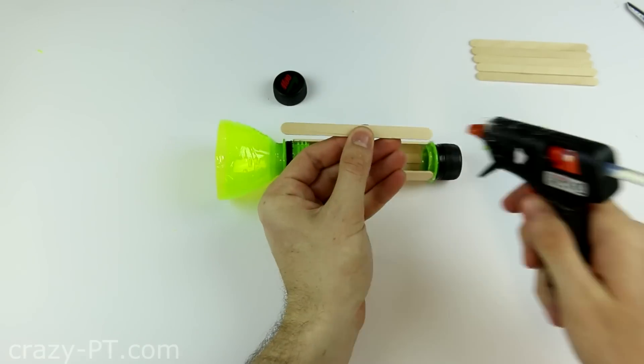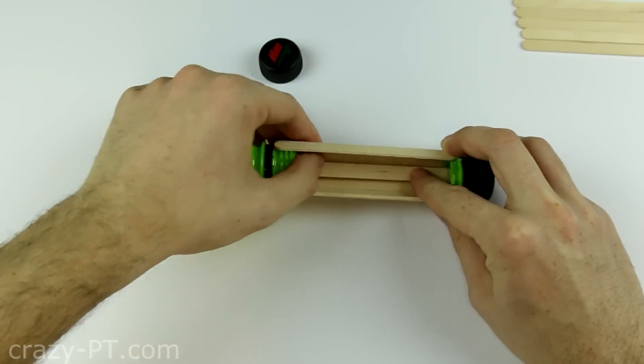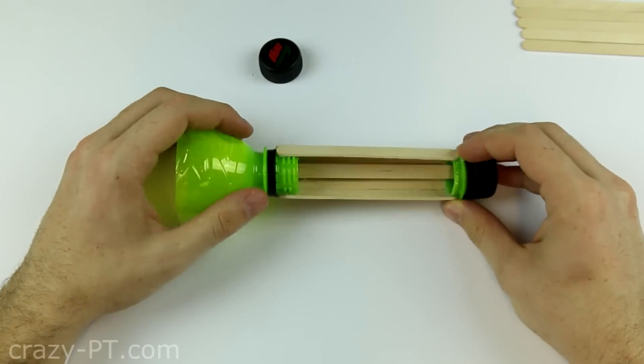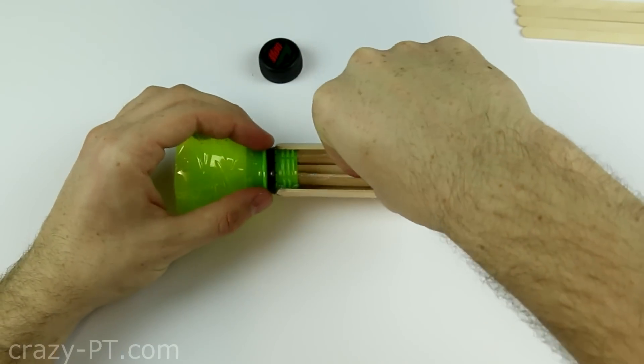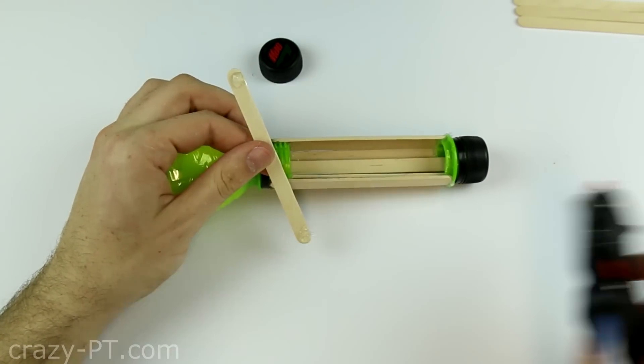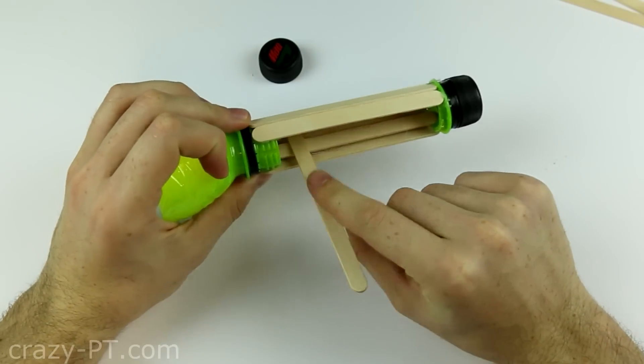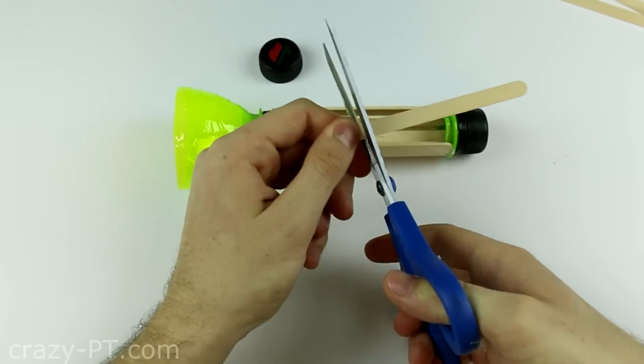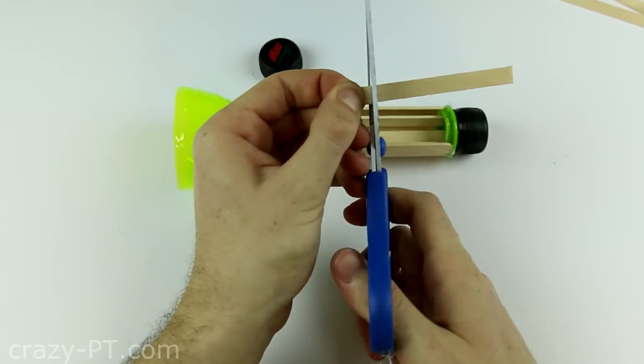Glue 3 sticks inside as you are watching in the video. Cut 2 small pieces with this approximate size and now glue in the place as you see.